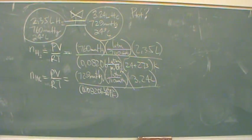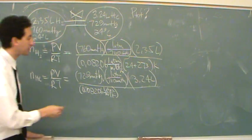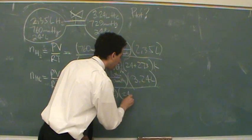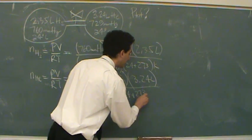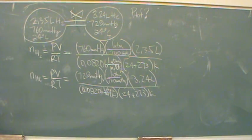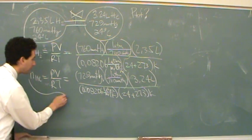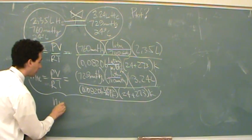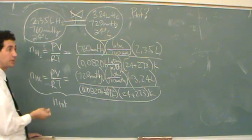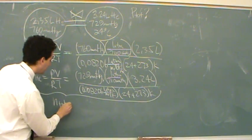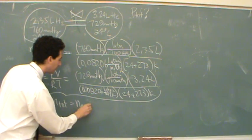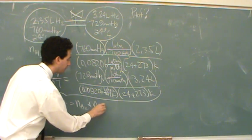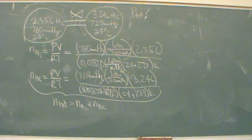And in this case, we have the same temperature, so we don't have to worry about temperature. It's 24, 24 plus 273 to change it to Kelvin. So now I have the moles of H2 on the left side and the moles of helium on the right. If I add these up, N total, which will be our total moles, once we've mixed, it's going to be the moles of hydrogen plus the moles of helium. So far so good?